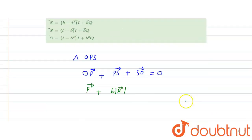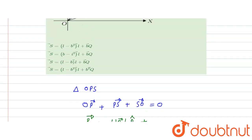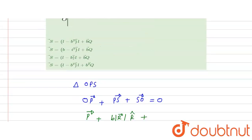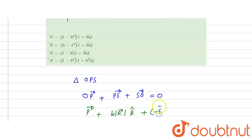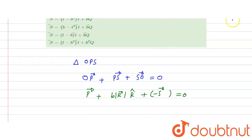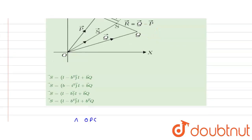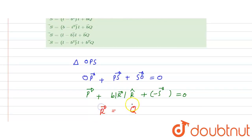We take r-hat (r cap). In the diagram, SO is the negative s vector, so we write minus s vector. Since r equals zero leads to minus s vector equal to zero, and from the question r vector equals q vector minus p vector.